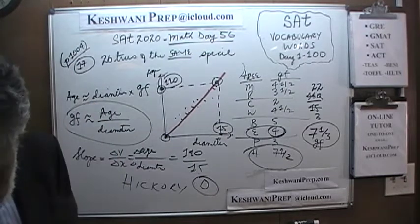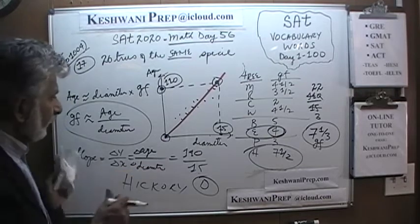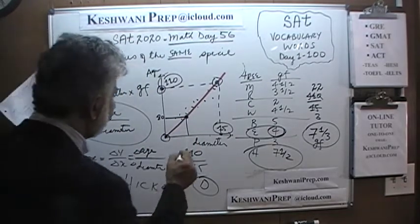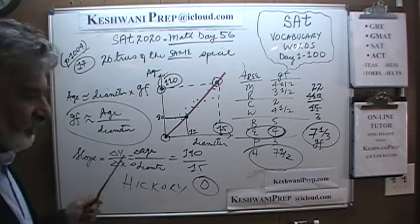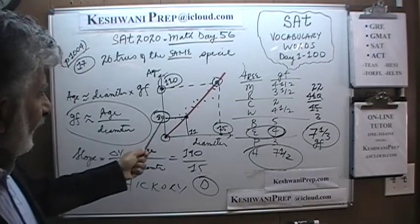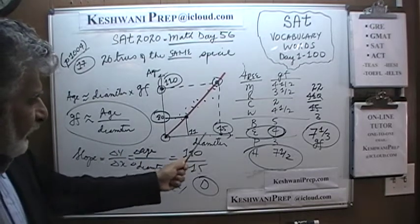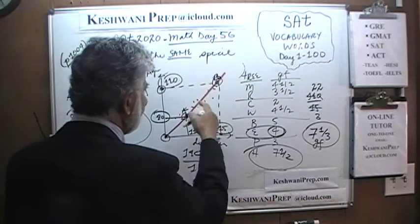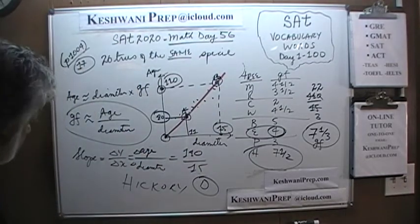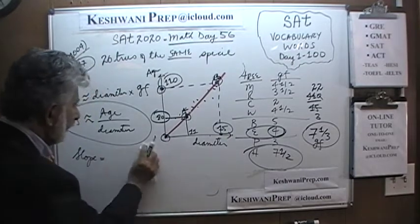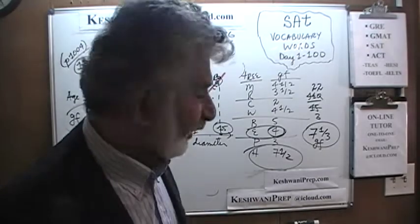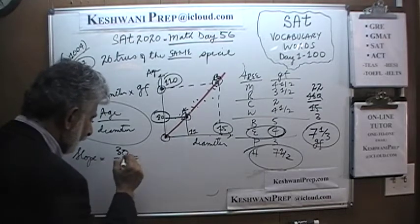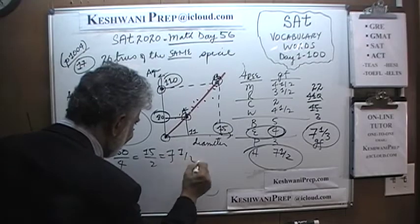That was question number 17. Now in the book, instead of using the origin, they used another point: 80 and 11. The only thing that does is create more work. The change in y is 110 minus 80, which is 30, and the change in diameter is 15 minus 11, which is 4. So we do 30 over 4, which is 15 over 2, which is 7.5 — exactly the same answer.